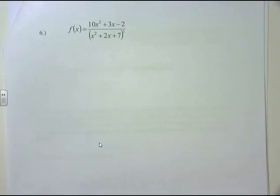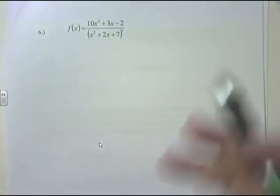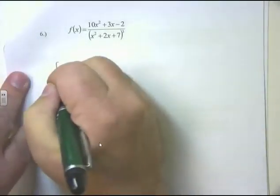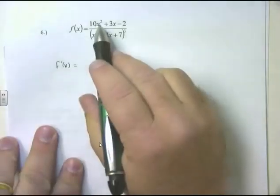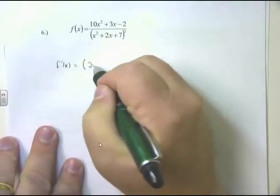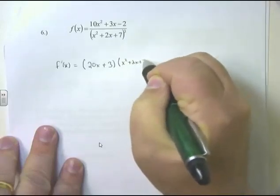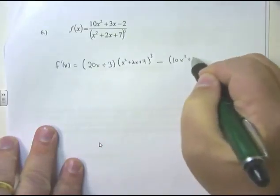One more example: f(x) = (10x² + 3x - 2) / (x² + 2x + 7)³. Pause and think — what's the big picture? I see garbage divided by garbage. That big long division in the middle tells me this is a quotient rule. Quotient rule: derivative of the top times the bottom minus the top times the derivative of the bottom, all over the bottom squared. Derivative of the top: derivative of 10x² + 3x - 2 is 20x + 3. Times the bottom, (x² + 2x + 7)³.